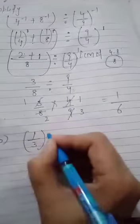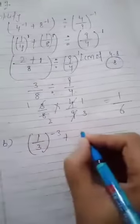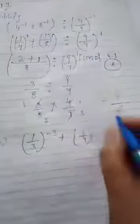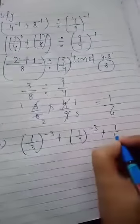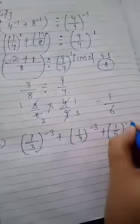Next part. 1 by 3 raised to power minus 3, plus 1 by 4 raised to power minus 3, plus 1 by 5 raised to power minus 3.